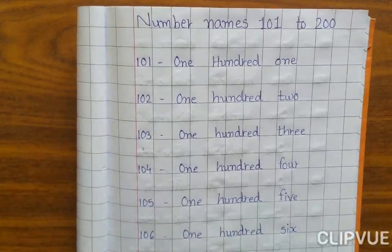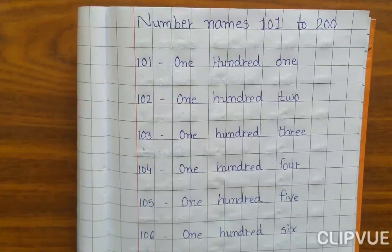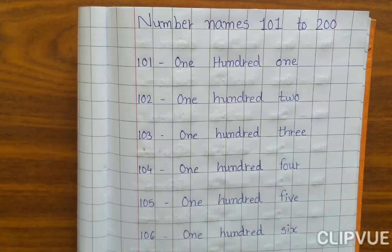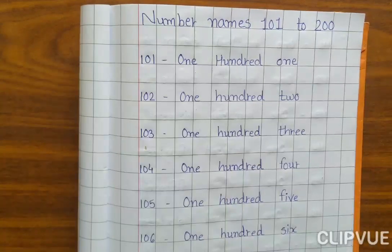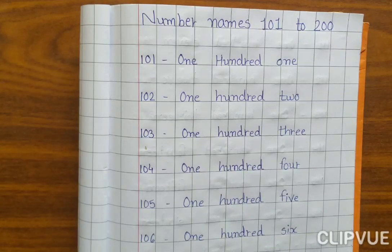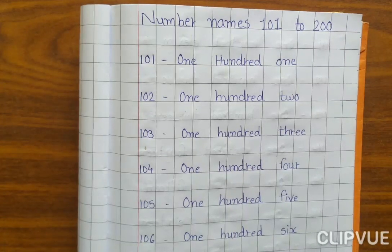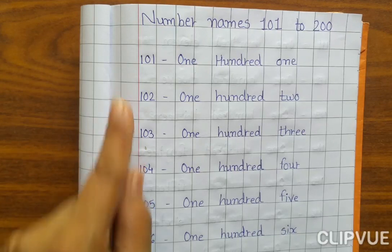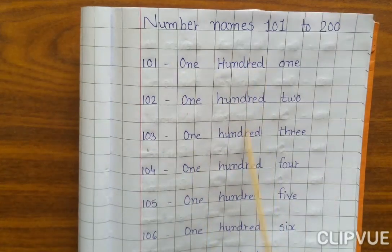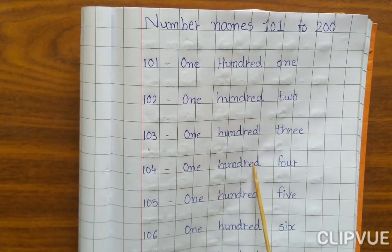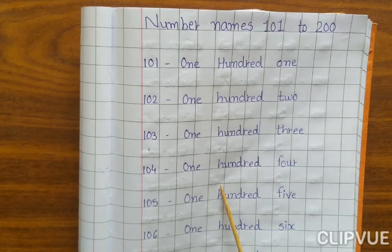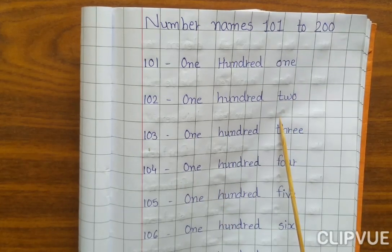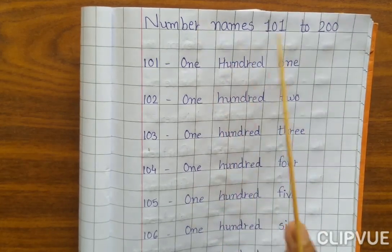Hello everyone. In the previous video you learned about the numbers 101 to 1000. Now in today's video you will learn about the number names. You will write all the number names in your notebook, just like me — I also write in a box notebook. Don't forget to write down the date. Now let's start number names 101 to 200.